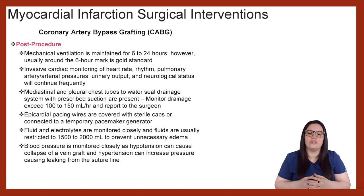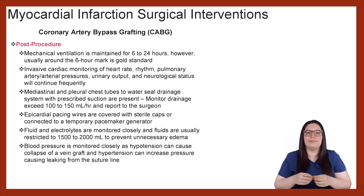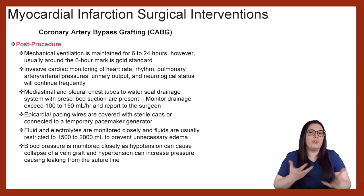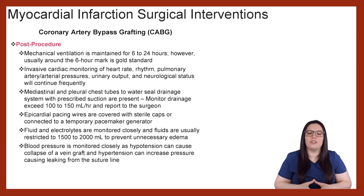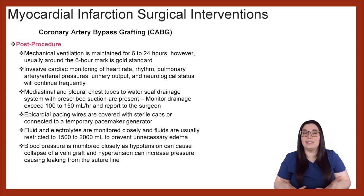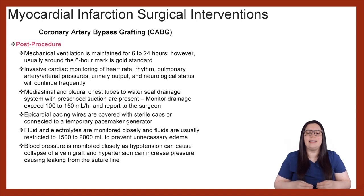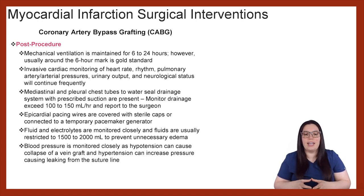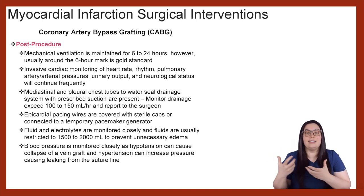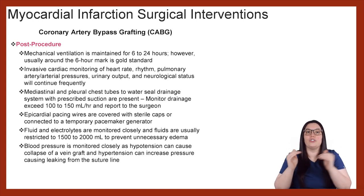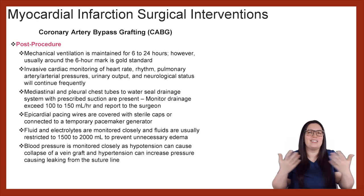Epicardial pacing wires are usually covered with a sterile cap and taped to the patient's chest, or can be connected to a temporary pacemaker generator depending on how the patient did post-procedure. Fluid and electrolytes are also monitored closely, and fluids are usually restricted between 1,500 to 2,000 mLs to prevent unnecessary edema post-procedure. Blood pressure is monitored closely, as hypertension can cause collapse of the vein grafts placed or increase the chance of suture lines leaking — so we really want to keep blood pressure within a normal range to avoid unnecessary complications to the grafts.